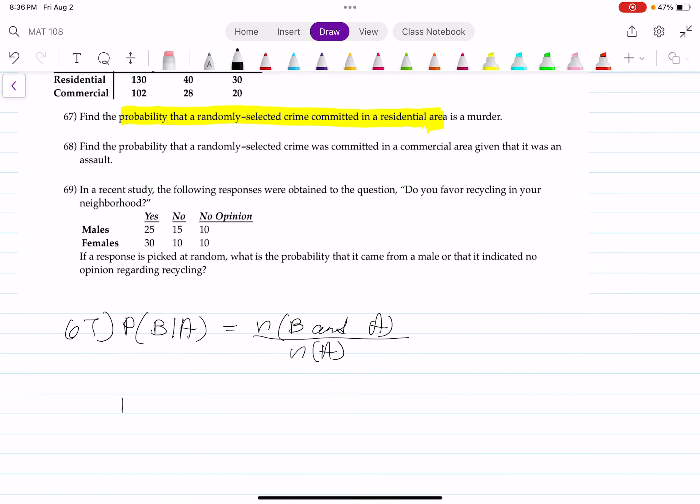In our case, we want to find the probability that the crime is a murder given that it happened in a residential area. And that makes sense because it says find the probability that a randomly selected crime committed in a residential area is murder.